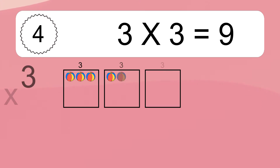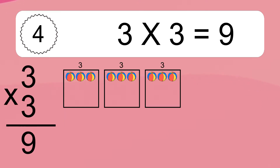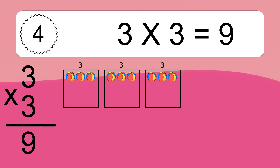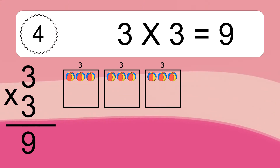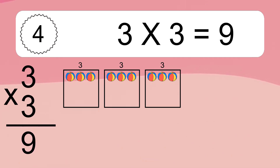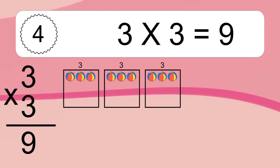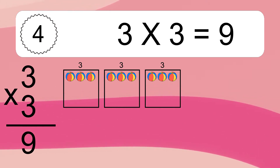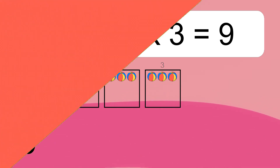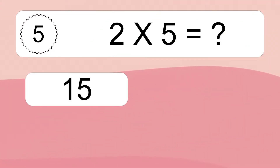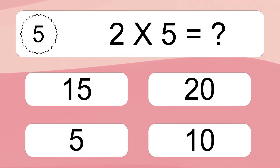3 times 3 equals what? 3 times 3 equals 9. We have 3 boxes, and each box has 3 colorful balls inside. If you count all the balls in all the boxes together, you will have 3 times 3 balls. This equals 9 balls.